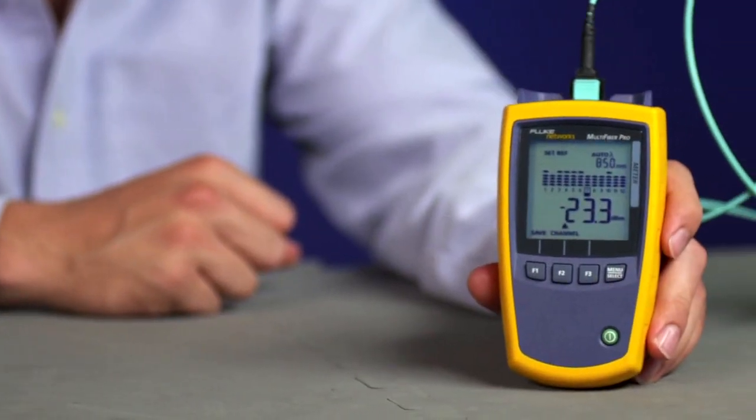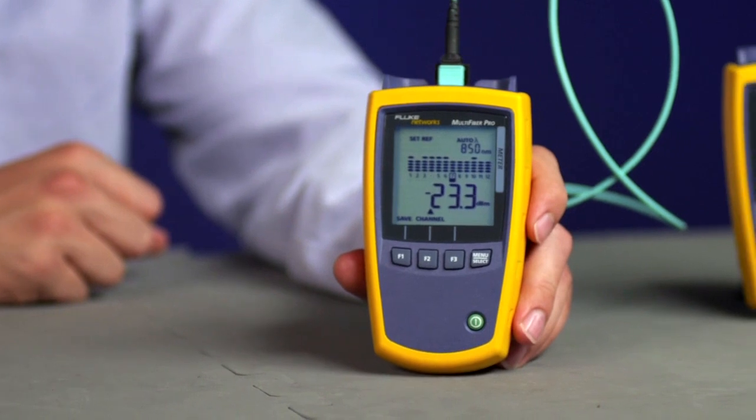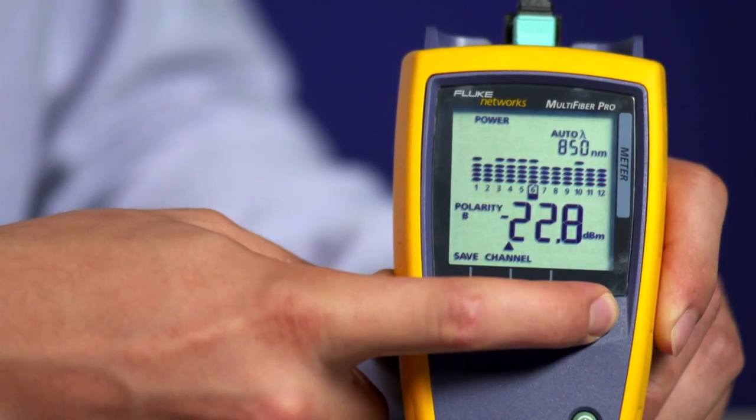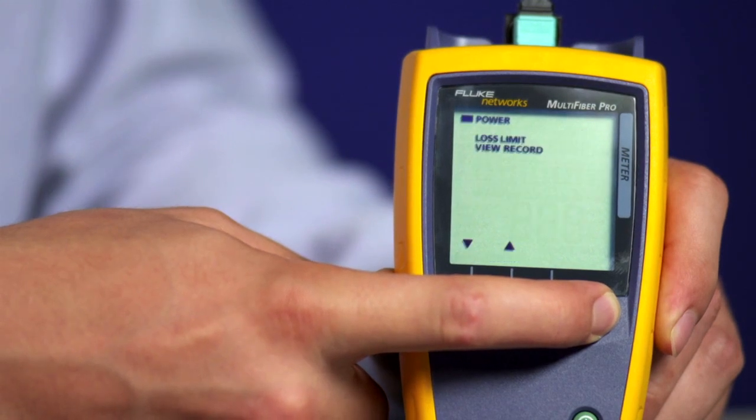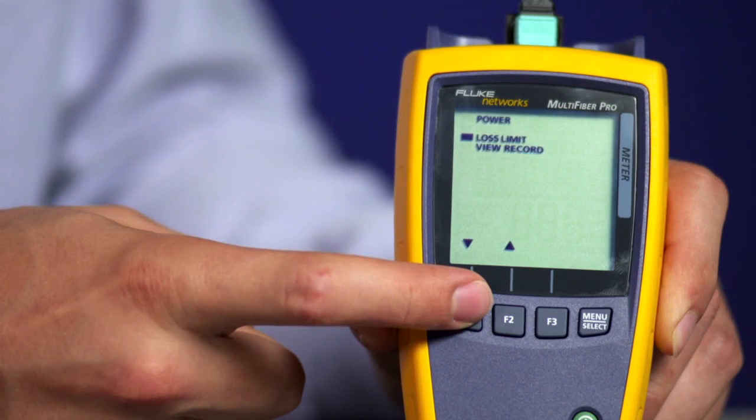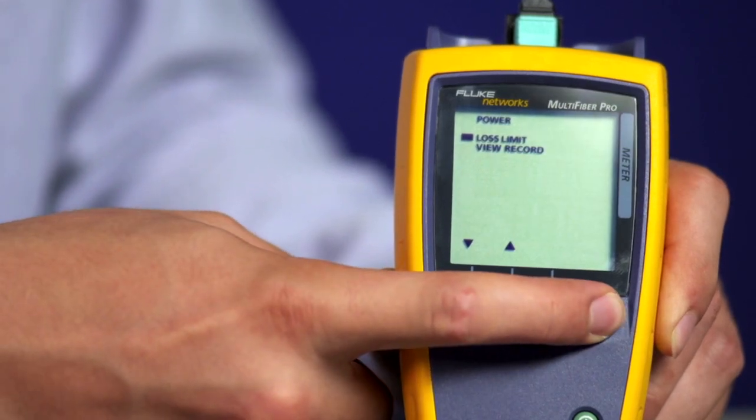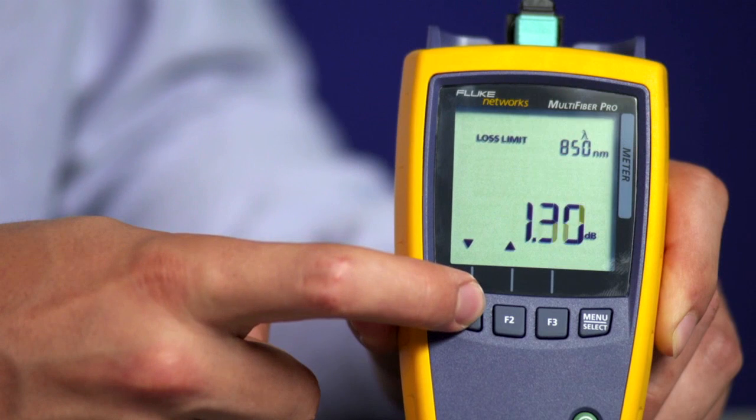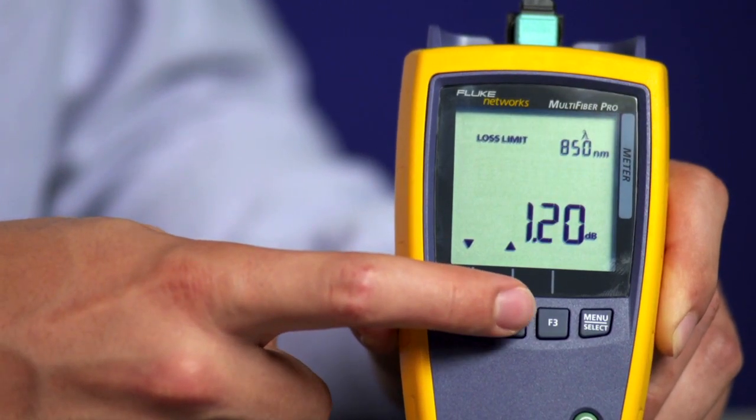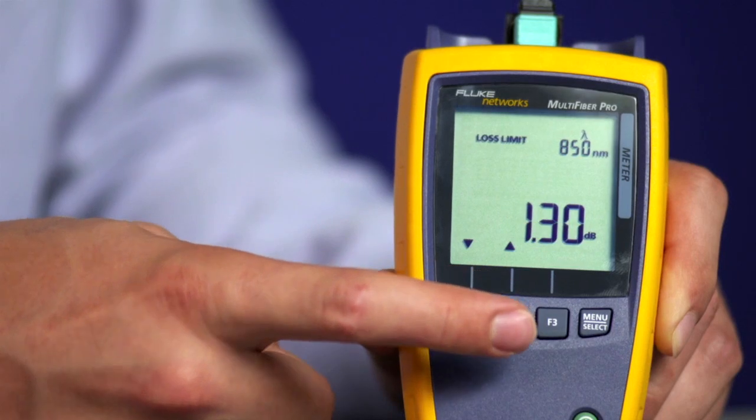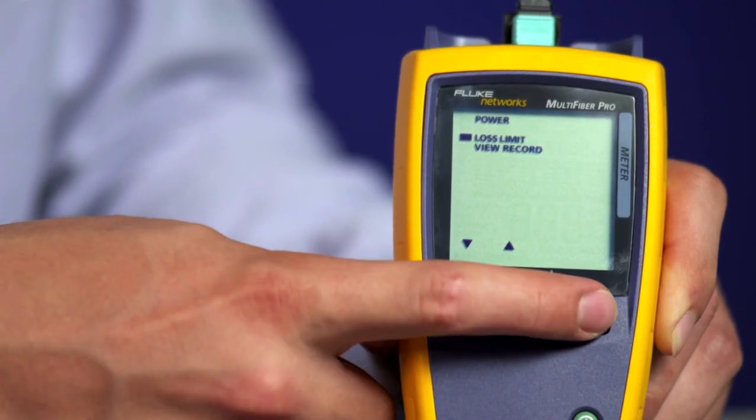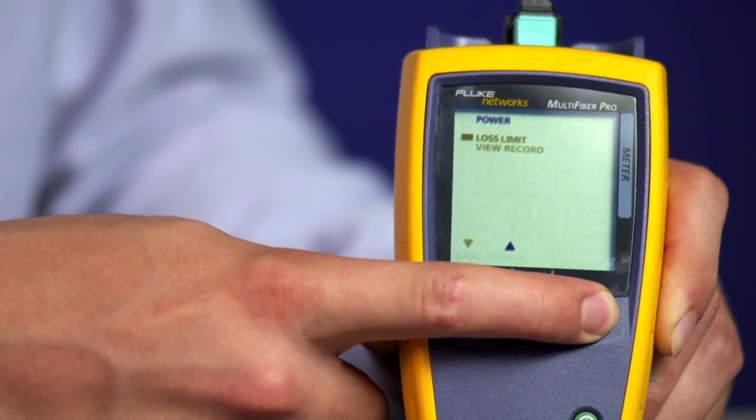After you've set the reference with the supplied MPO test cords, make sure you use the correct loss limit. Press MENU for 3 seconds, then use the arrow keys to move to Loss Limit. Press MENU again and use the F1 or F2 key to set your designated loss limit value. Now press MENU once to save, and press and hold MENU to go back to the main screen.